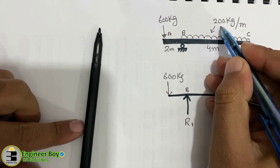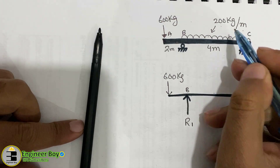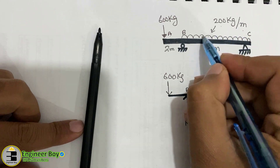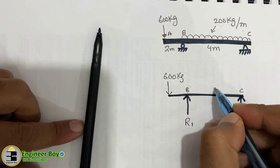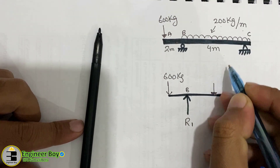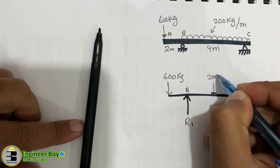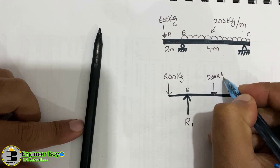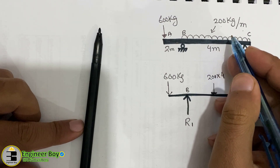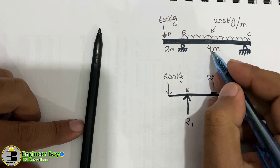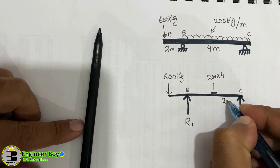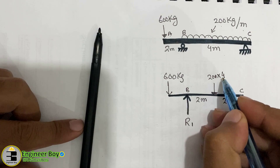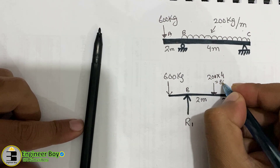At mid-span we have a UDL of 200 kg per meter, which we need to convert to a point load. The UDL acts over the full 4-meter span, so the equivalent point load is 200 kg/m × 4 m = 800 kg, applied at the midpoint — 2 meters from each support.